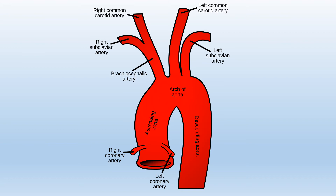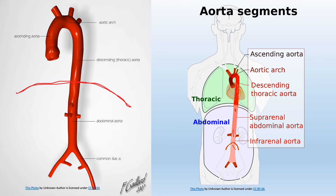Looking at the descending aorta, it has two portions. Above the diaphragm — represented by a dome-shaped horizontal line — we call it the thoracic aorta, since it is in the thoracic cavity. Below the diaphragm it is called the abdominal aorta, as it is in the abdominal cavity. Some authors further subdivide the abdominal aorta into suprarenal and infrarenal abdominal aorta, based on the origin of the renal artery branches.